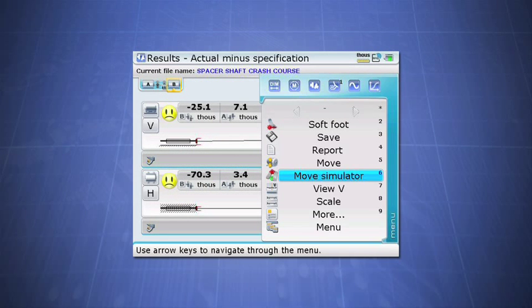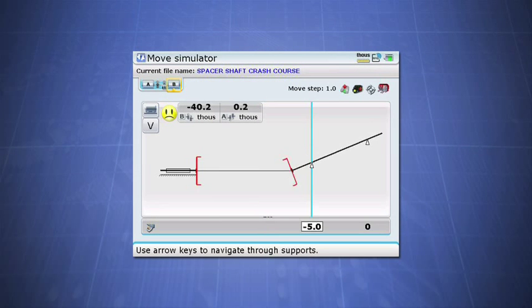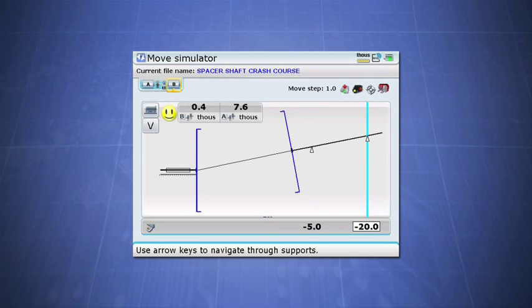The Move Simulator feature in Spacer Shaft mode allows you to predict the outcome of an alignment based on the moves you plan to make.